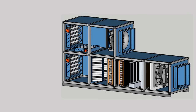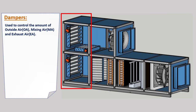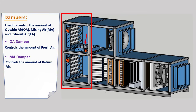Now let's have a look at different components of an AHU. The AHU shown on screen is a return air type AHU, one of the most commonly used inside buildings. First, let's look at dampers. The fresh air damper controls the amount of fresh air entering the AHU. The mixed air damper controls the amount of return air being mixed with the fresh air, and the exhaust air damper controls the amount of air being exhausted from the AHU.